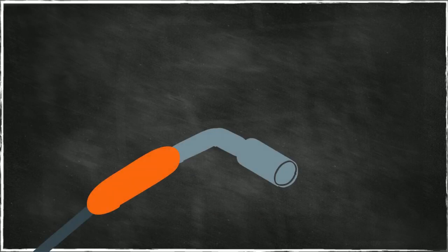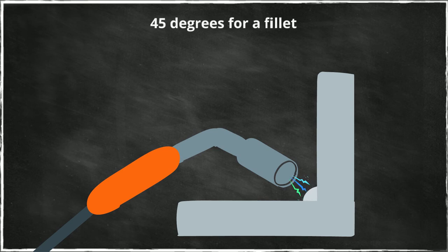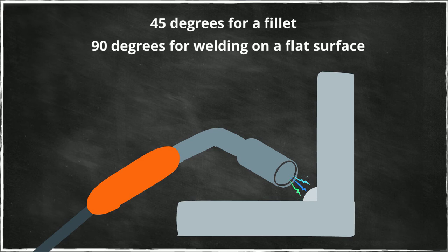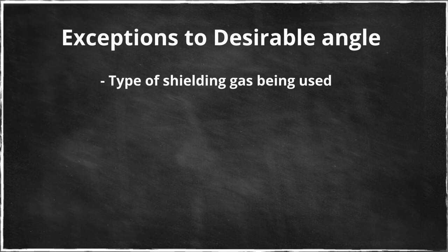The orientation of the gun relative to the weldment is also important. It should be held so as to bisect the angle between the workplaces. That is at 45 degrees for a fillet weld and at 90 degrees for a welding on a flat surface. Travel angle or lead angle is the angle in which the gun with respect to the direction of travel should generally remain approximately vertical. However, the desirable angle changes somewhat depending on the type of shielding gas being used. With pure inert gas, the bottom of the torch is often slightly in front of the upper section, while the opposite is true when using welding with atmospheric carbon dioxide.